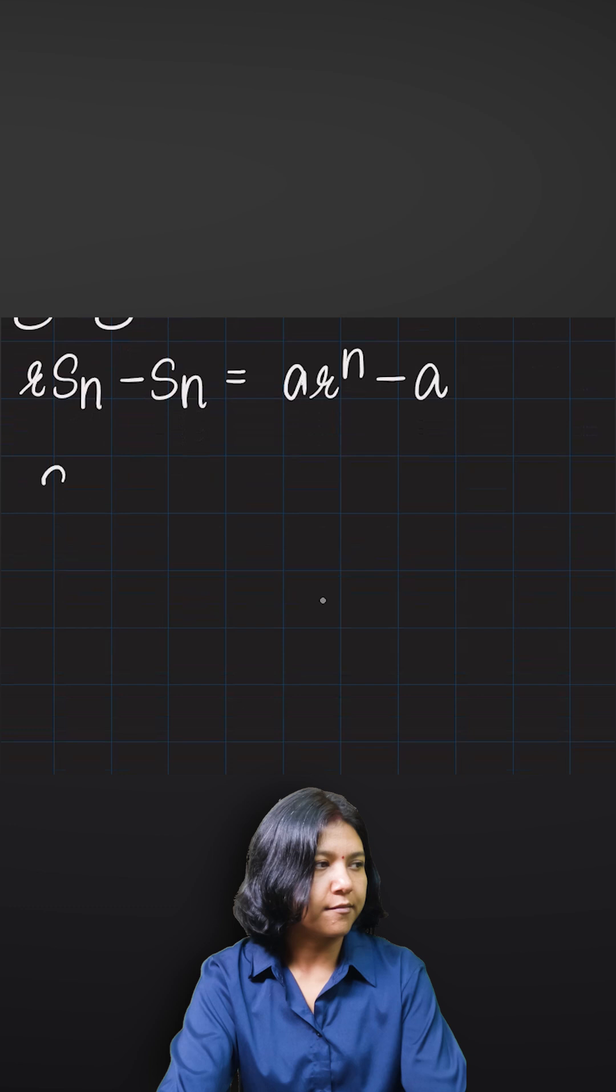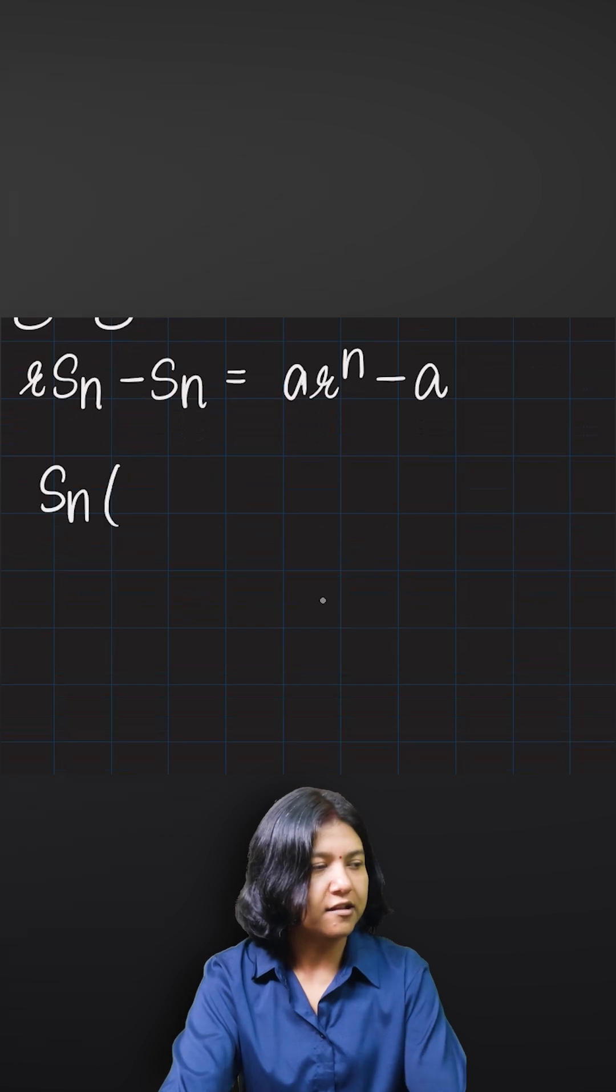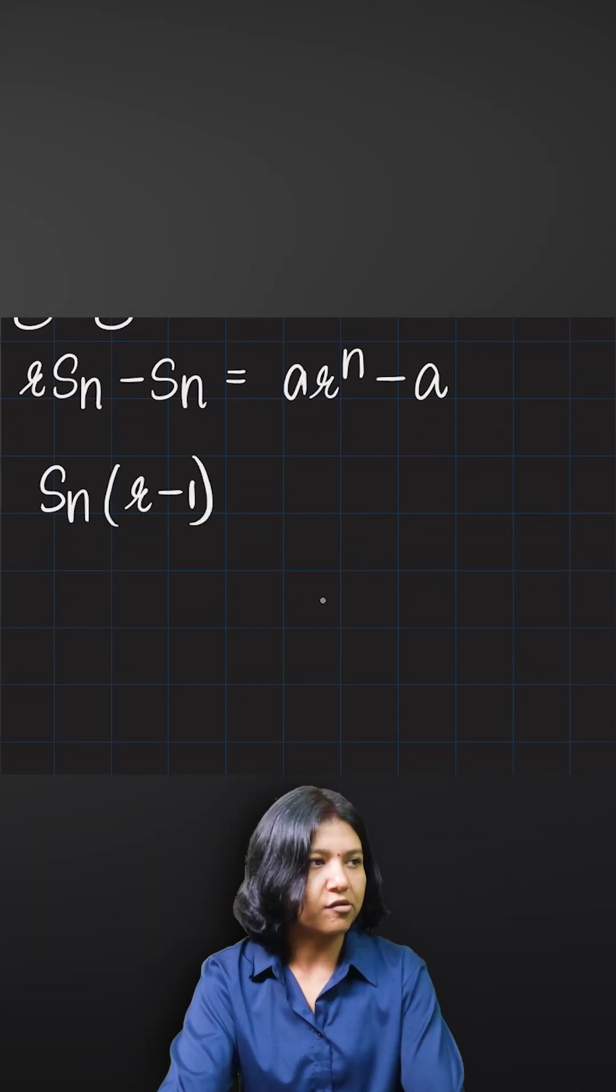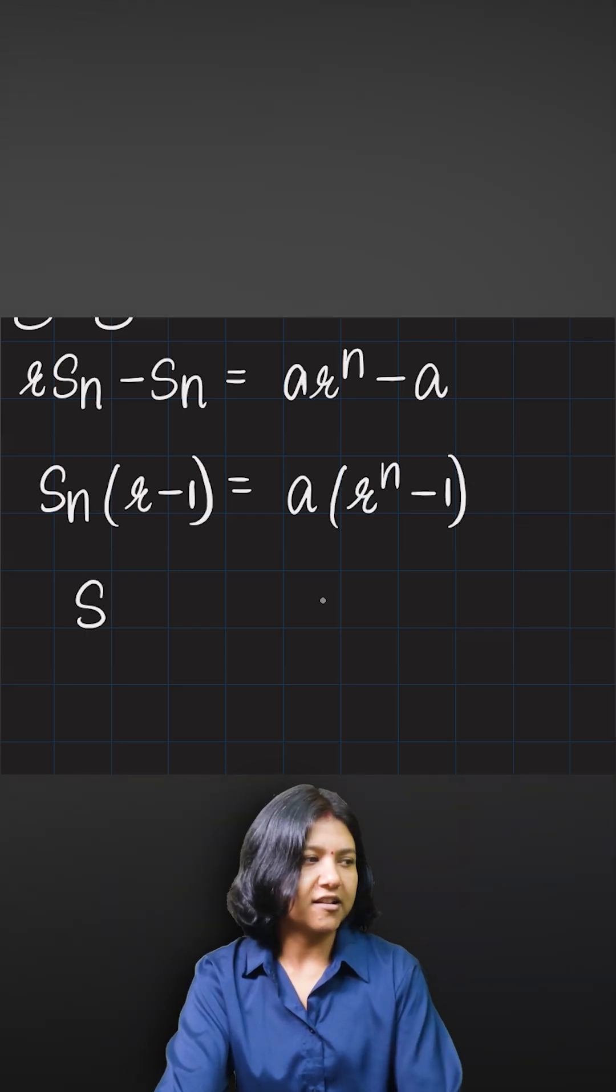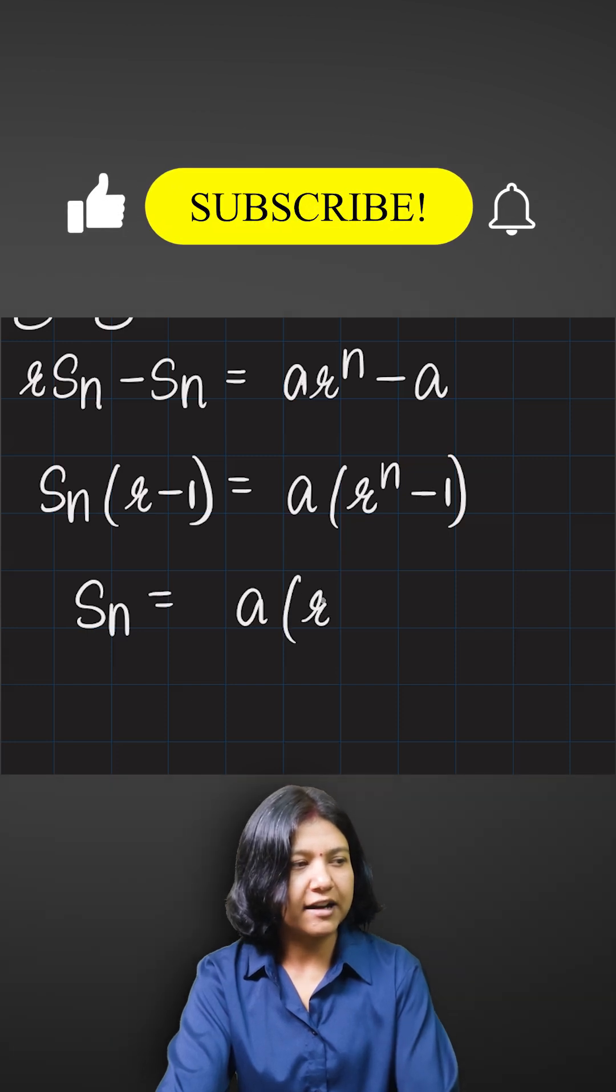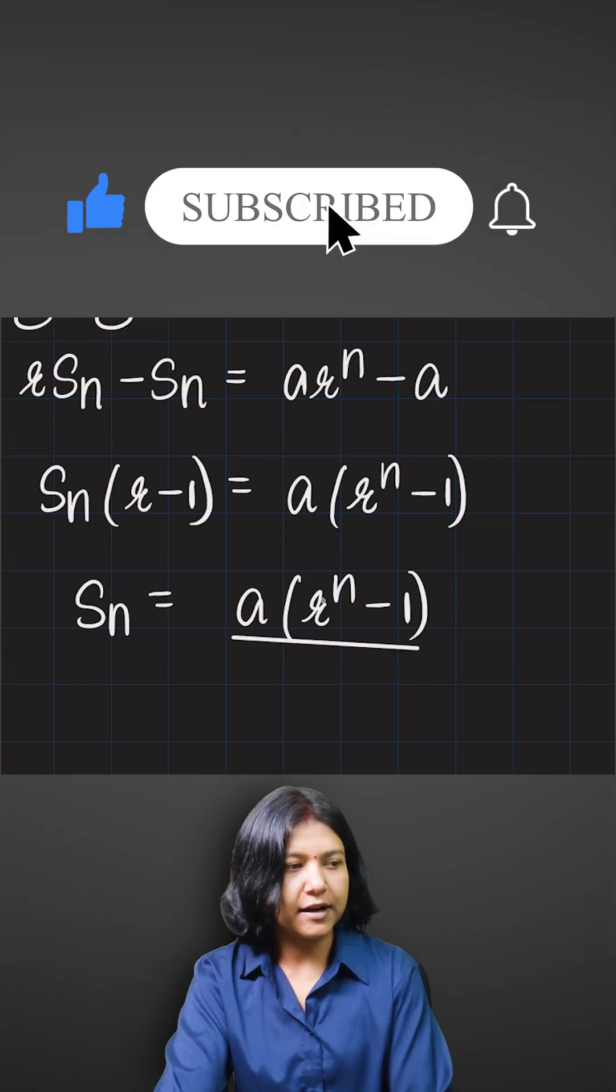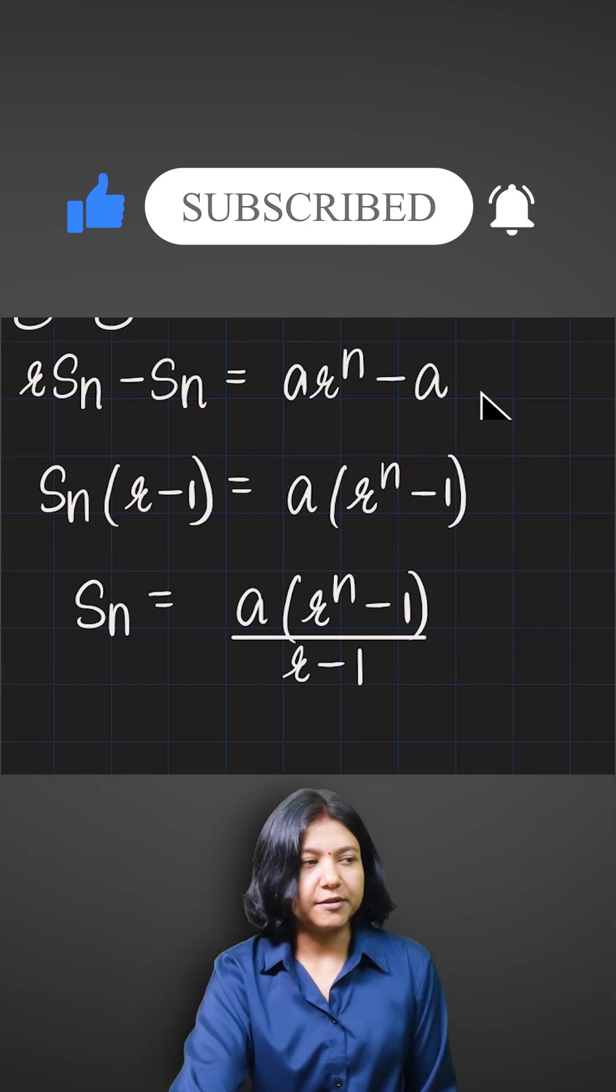Now, because sum is what we are trying to find, this can be factorized: Sn times (r minus 1) should be equal to a times (r to the power of n minus 1). So finally, the sum formula is now very simple: first term multiplied with r to the power n minus 1, divided by r minus 1. Isn't it simple?